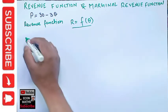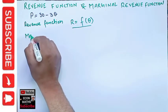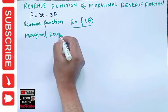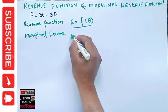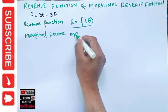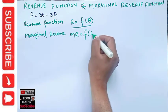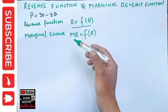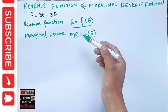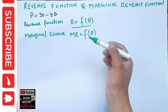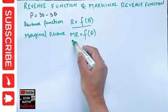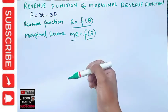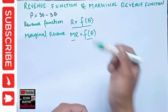Similarly, marginal revenue, which we write as MR, is also a function of quantity. It tells us how much additional revenue a firm will get by selling one extra unit of the product. This is also a function of the quantity sold.